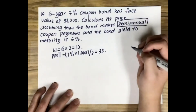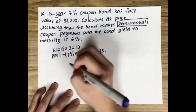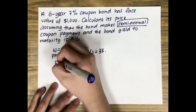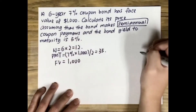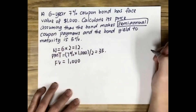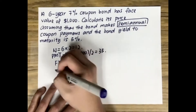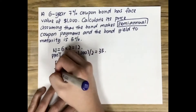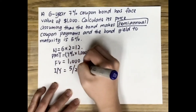The face value of this bond is $1,000, so FV equals $1,000. The yield to maturity is 5%, but that's the yield to maturity for an annual coupon bond, so we have to divide it by 2, which gives us an IY of 5 divided by 2, which is 2.5%.